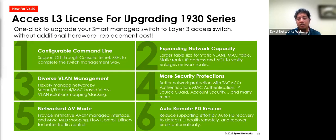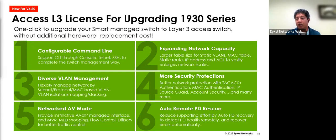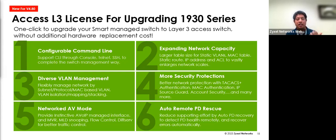The license also adds VLAN management: MAC-based VLAN tagging, additional subnet protocols, VLAN isolation, and VLAN Q-in-Q so you can tag a VLAN tag with another tag as you encapsulate and transport it across different networks while maintaining VLAN tags. You get more security protection — tag authentication, MAC authentication, IP source guard, account security, and many more security protocols. You also get a Network AV mode: if you're doing network AV for multicast of screens, televisions, hospitality applications, or digital signage, it gives you an AV mode with configurations simplified for MRV, MLD snooping, flow control, DSCP, etc. for better traffic control.